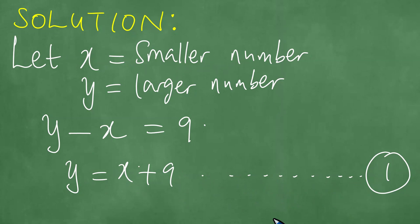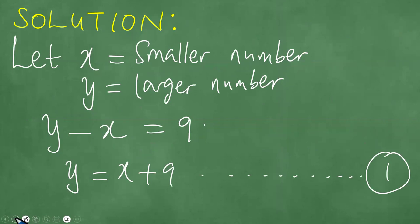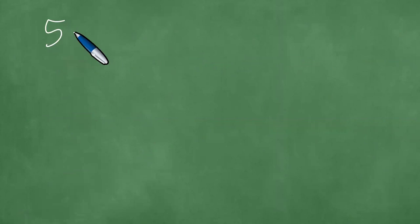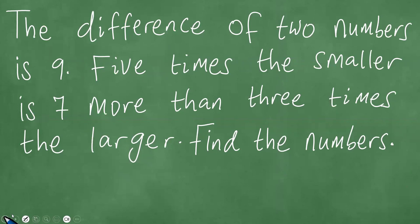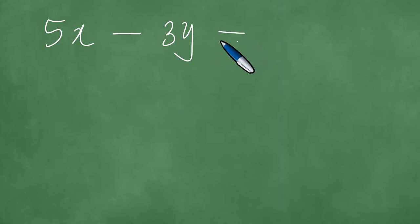The second equation says five times the smaller is seven more than three times the larger. The smaller is x, so we have five x. Five times the smaller is seven more than three times the larger, so the difference is seven. Let us call this equation two.